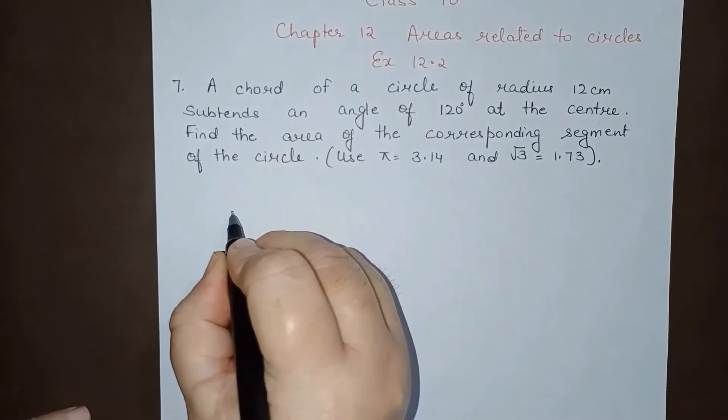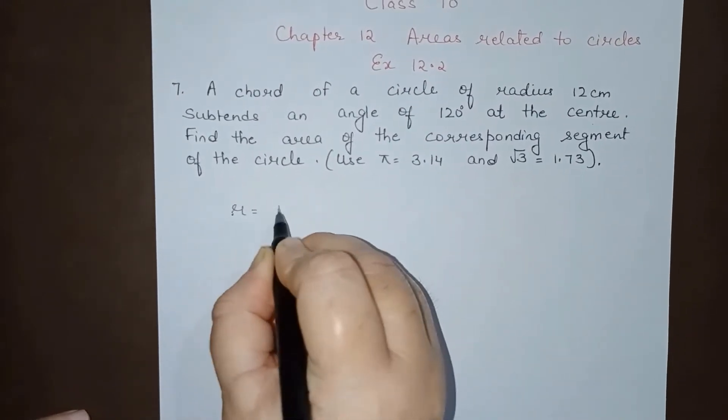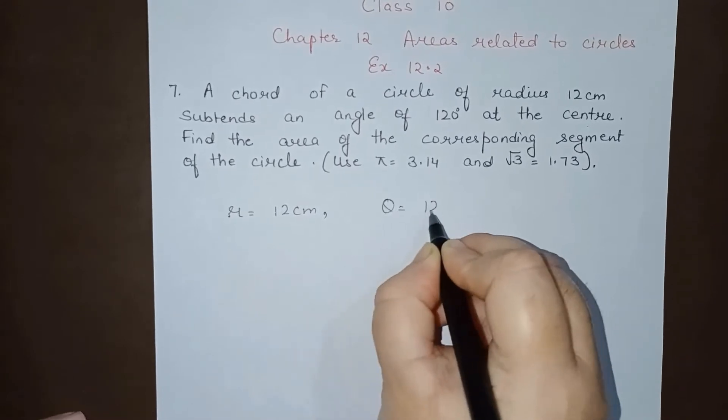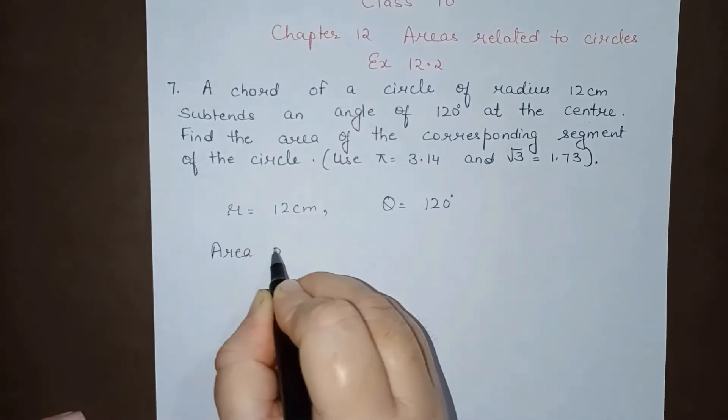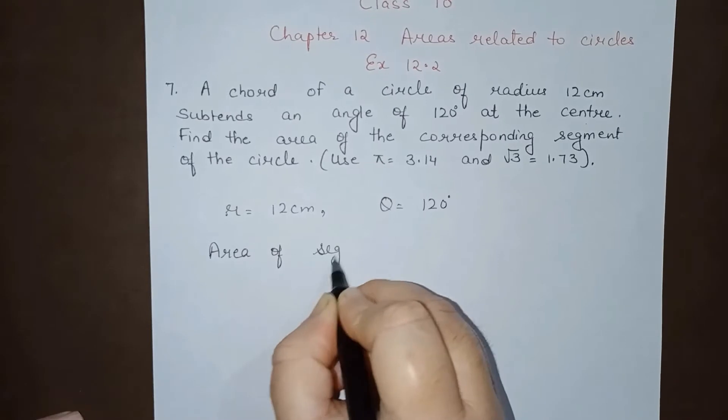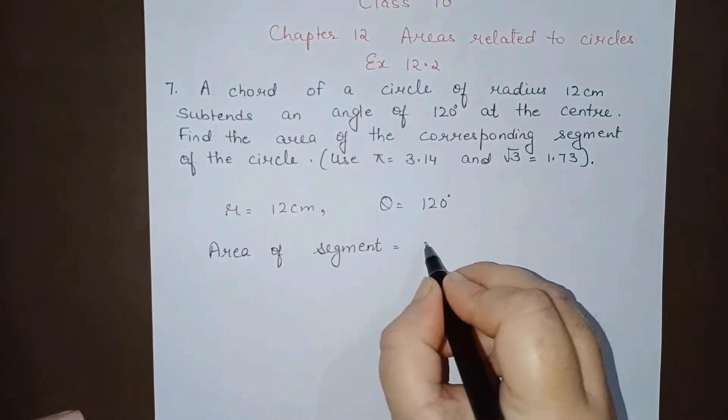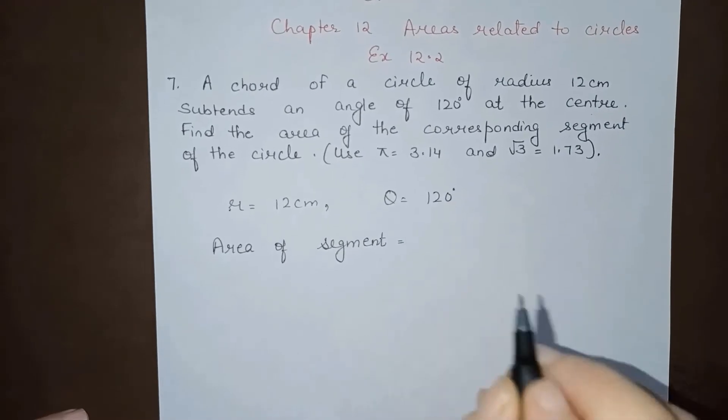Now here we can see r = 12 cm and θ = 120 degrees. Area of segment = area of sector - area of triangle.